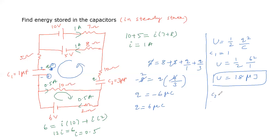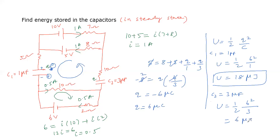For the second capacitor C2 = 3 µF, energy equals half times 6 squared divided by 3. This gives 36 divided by 6, which is 6 micro joules. So energy stored in C1 is 18 micro joules and energy stored in C2 is 6 micro joules.